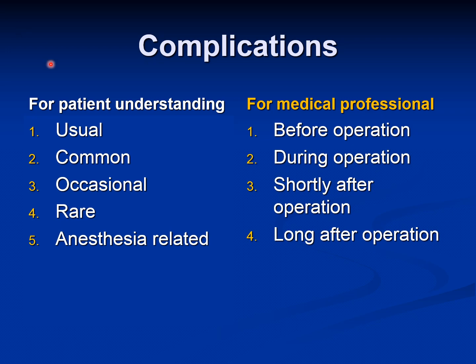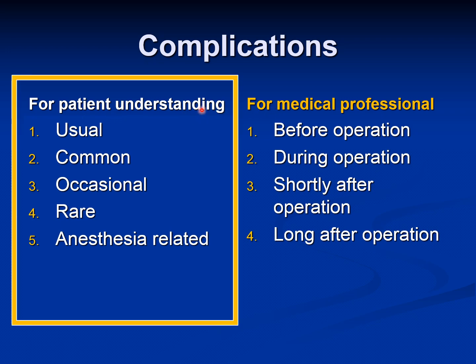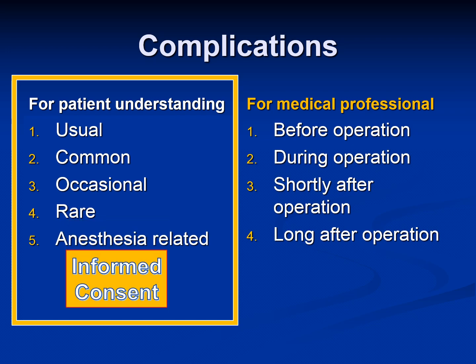The complications can be discussed in two different ways. One is for the patient's understanding, and the second is for medical professionals. For the patient's understanding, there are five different types of complications: the usual ones, the common ones, occasional, the rare ones, and anesthesia-related. If you explain all these complications to the patient, that's what we call informed consent.